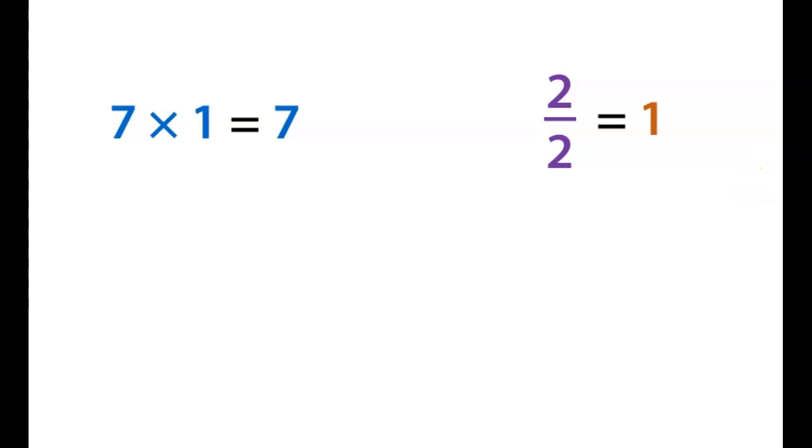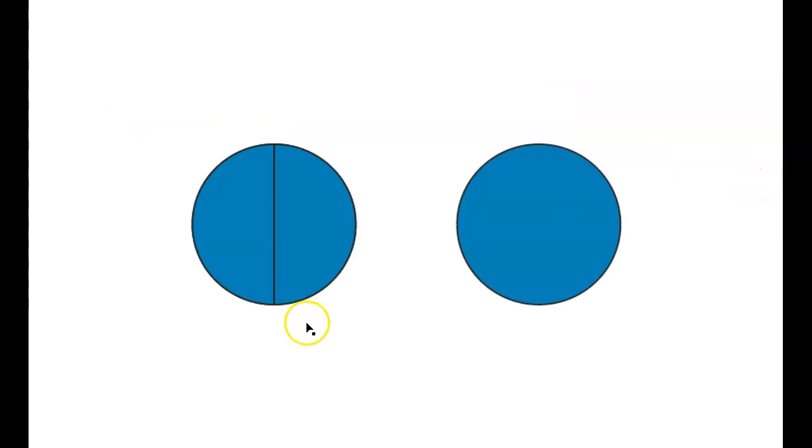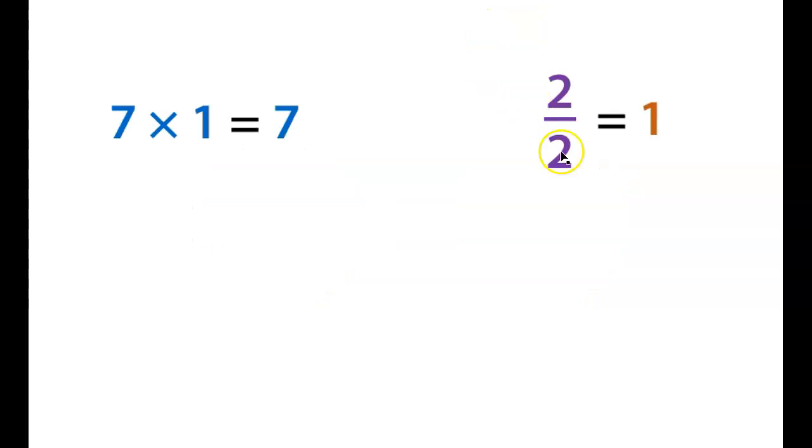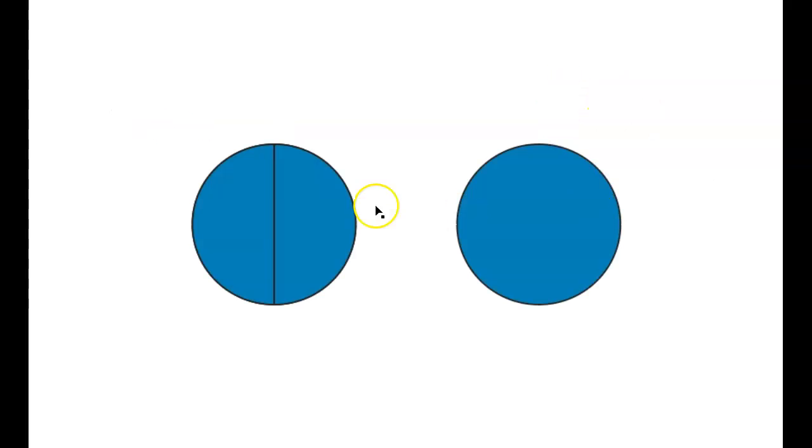And we know because we can visualize it. We look at this and we say, okay, two equal pieces. So we know denominator says two equal pieces. Two of them should be shaded in. So two equal pieces, two of them shaded in. That is the same as one whole.